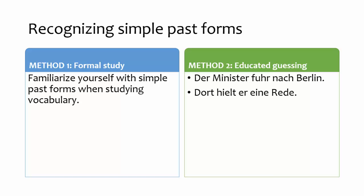You can learn to recognize the simple past forms using one or both of the following methods. One method is to familiarize yourself with the simple past form as you are learning vocabulary. Charts showing the principal parts of nearly every verb, including the present tense conjugation, present participle, and simple past, are readily available on the web.